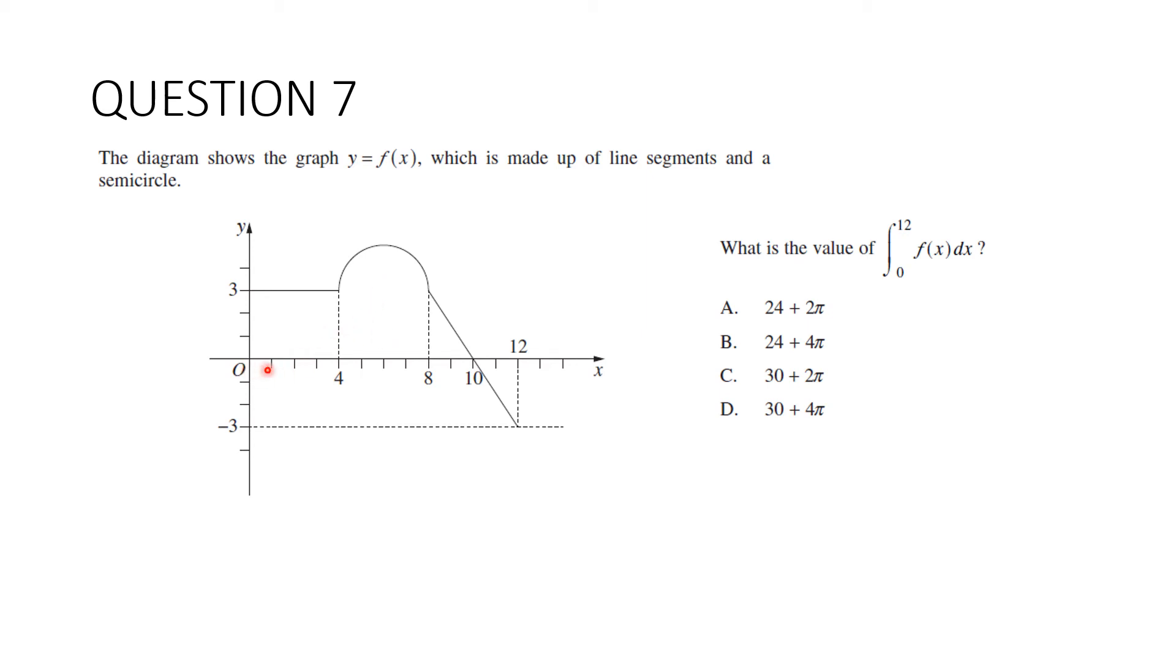The rectangle has a length of 8 and a width of 3. So that's 24. So we can tell straight away that it's going to be either a or b. So let's cross c and d out. And then we need a semicircle here. So we want a half times pi times r is 2 squared. So that gives us 2 pi. And so the answer is a.